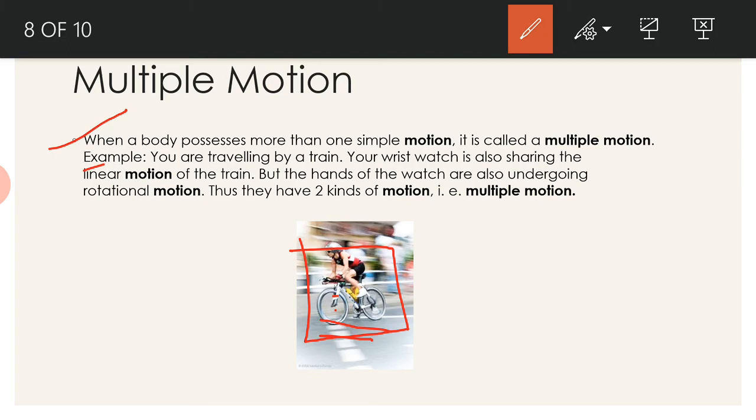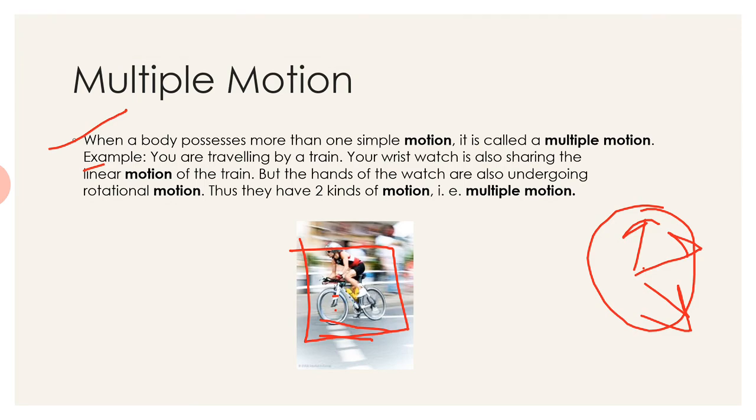Another example: when you travel by a train, the clock in the train has hour hand, minute hand and second hand. They take a circular and a rotational motion, so this is also an example of multiple motion.